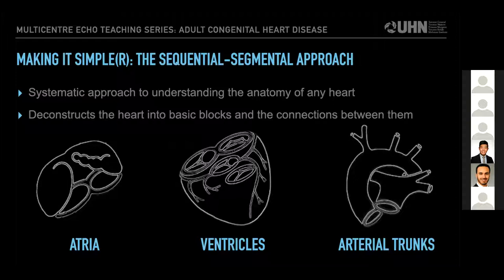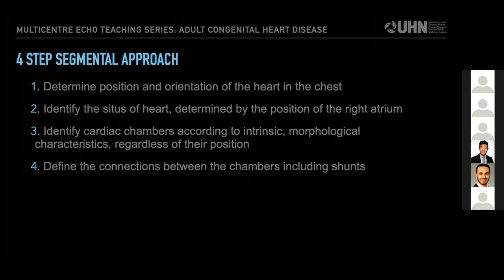The sequential segmental approach to congenital heart disease was developed by the Van Praaghs in the late 1970s and is the system of convention used throughout North America. Cardiac anatomy is assessed by dividing the heart into three distinct segments: the atria, the ventricles, and the arterial trunks. The approach begins by determining the position and orientation of the heart within the chest. In step two, we identify the situs or sidedness of the heart chambers, determined by the position of the right atrium. Next, we use intrinsic morphological characteristics to identify the various heart chambers regardless of their position, and then determine the connections between them including any shunts.